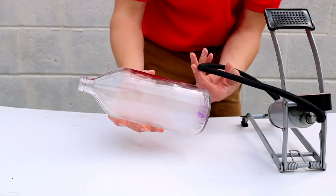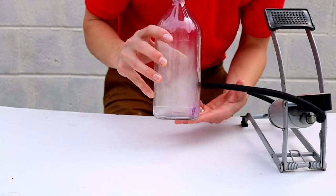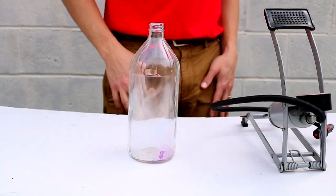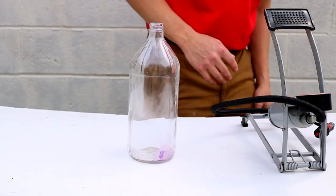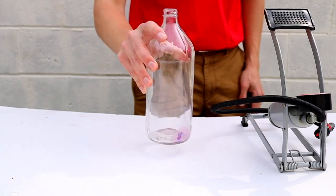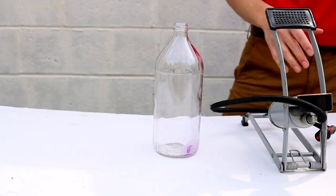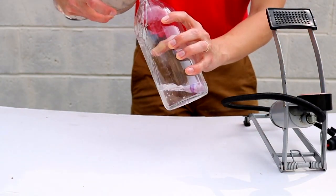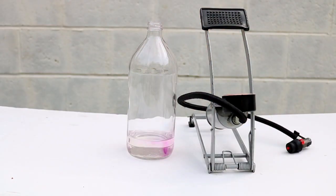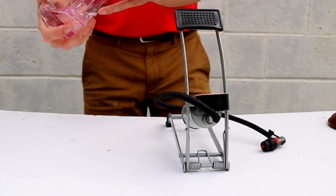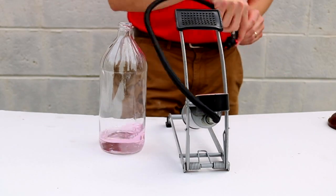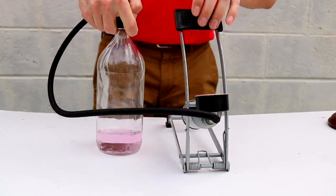And there you have it, a cloud in a bottle. Might be a little bit difficult to see, so let's see if we can change this experiment to make a bottle show a bigger cloud. This time we've got a little bit of water on the inside of the bottle. Let's see what happens this time.